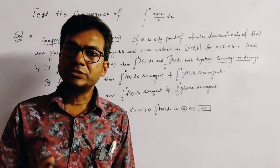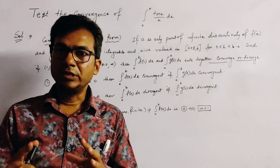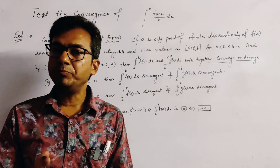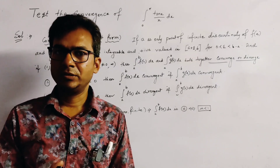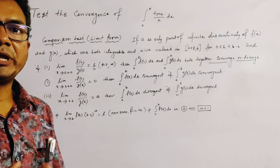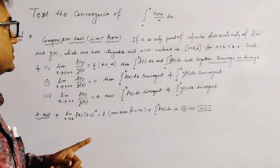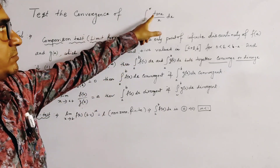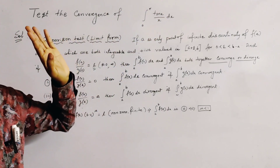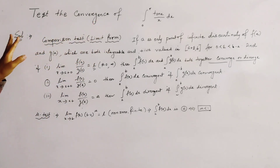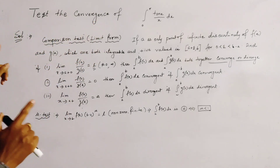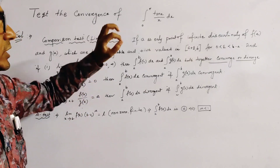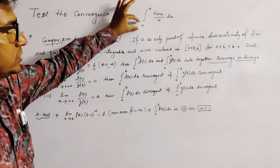In this class, we discuss the convergence of an improper integration. The improper integration is the integral from 0 to π of tan x divided by x dx, and we have to test the convergence of this integration. If we see that at the point 0, it looks like that 0 is the point of infinite discontinuity.